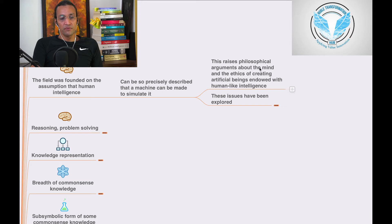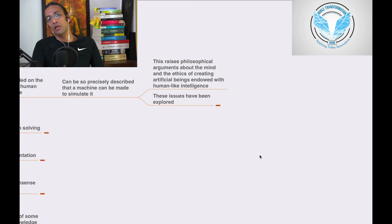This raises philosophical arguments about the mind and the ethics of creating artificial beings endowed with human-like intelligence. If it goes against humanity, what will happen? There are a lot of philosophical arguments about it.